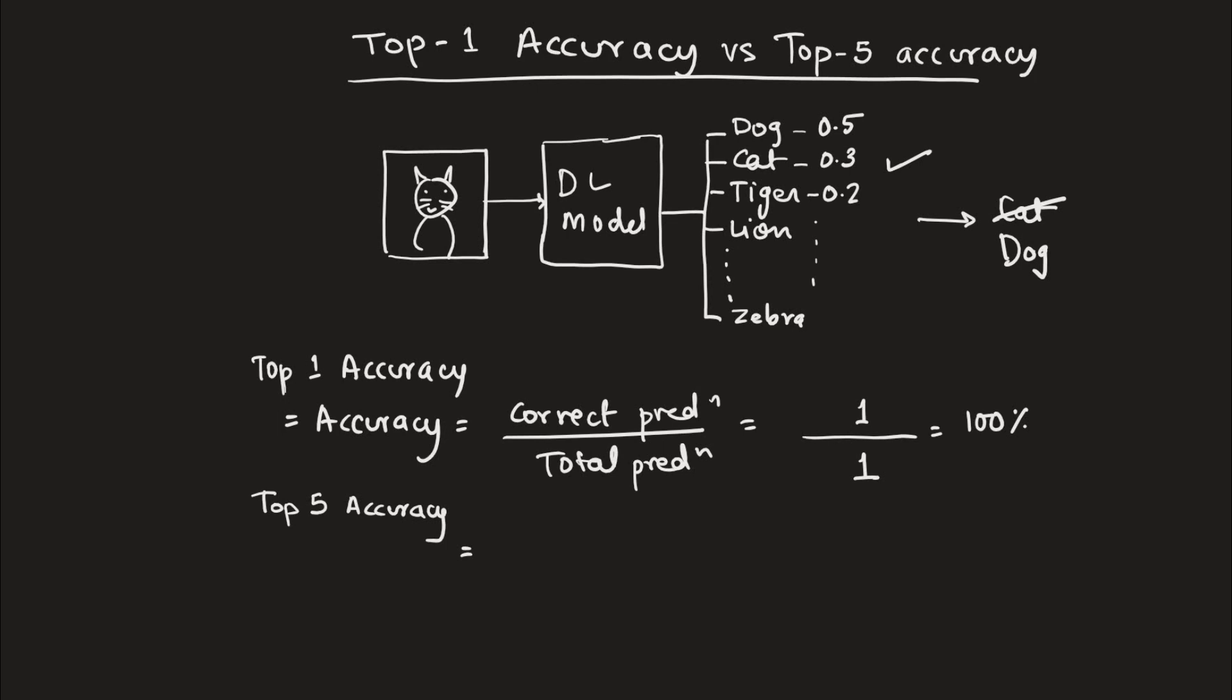So the top five probabilities here are dog, cat, tiger and so on. So we find five of them and out of these five, one of them is a cat. So the top five probabilities contain the correct label.